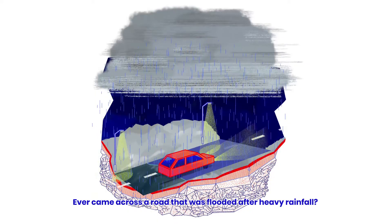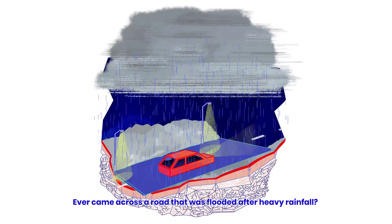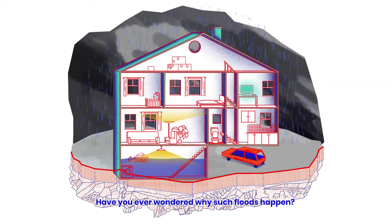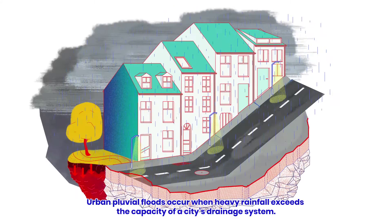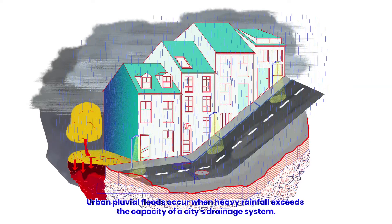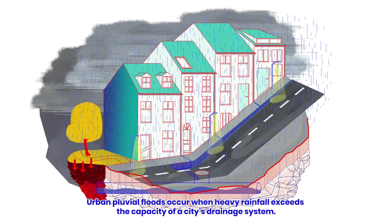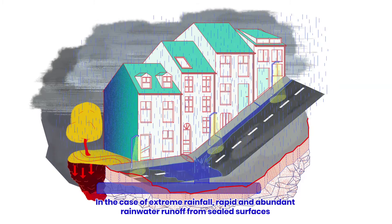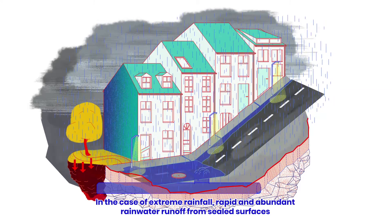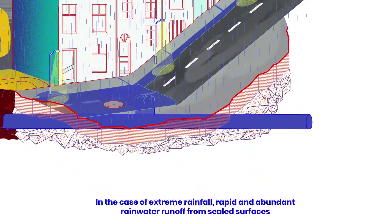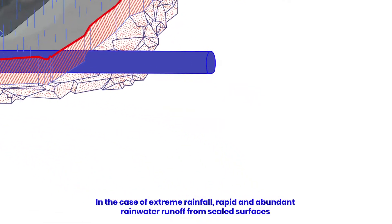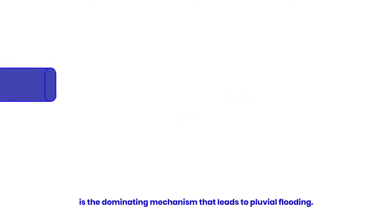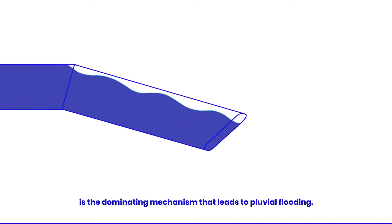Ever come across a road that was flooded after heavy rainfall? Maybe your home has been flooded. Have you ever wondered why such floods happen? Urban pluvial floods occur when heavy rainfall exceeds the capacity of a city's drainage system. In the case of extreme rainfall, rapid and abundant rainwater runoff from sealed surfaces is the dominating mechanism that leads to pluvial flooding.